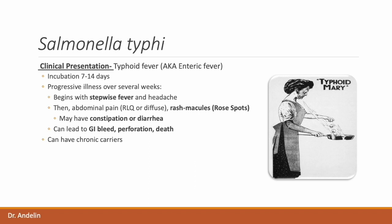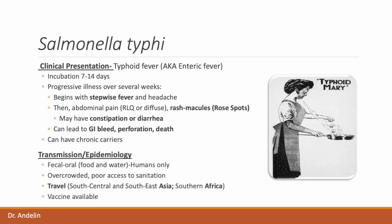Some patients that recover, like the famous Typhoid Mary from the early 1900s, can go on to become chronic carriers of Salmonella typhi, harboring the bacteria in their gallbladder. Unlike non-typhoidal Salmonella that can spread through animal contact, Salmonella typhi is only spread person to person through the fecal-oral route, typically through contaminated food or water. While not common in the United States, you should consider this in an individual who's traveled to endemic areas such as South Central or Southeast Asia and Southern Africa. Luckily, there is a vaccine available.